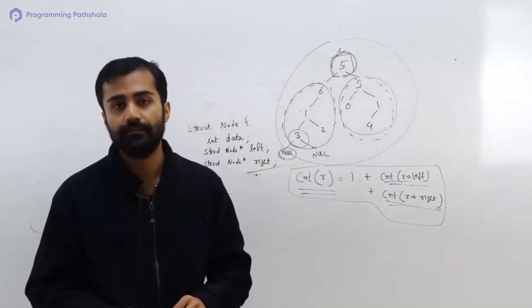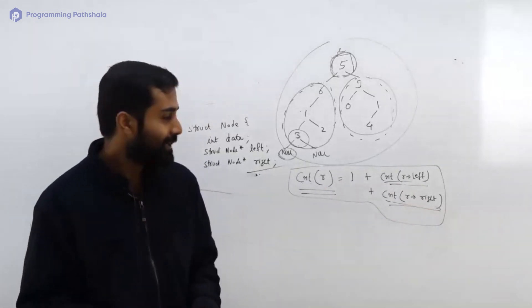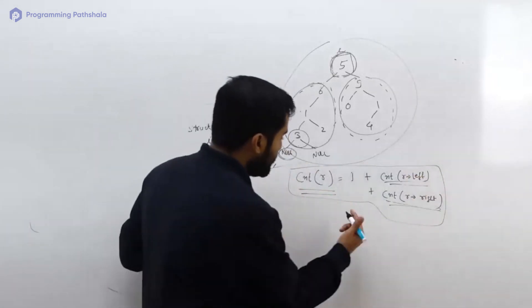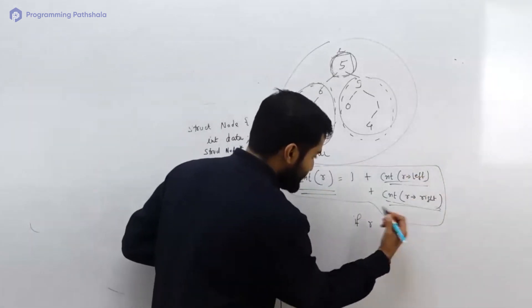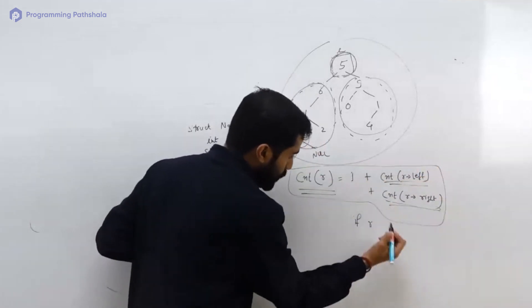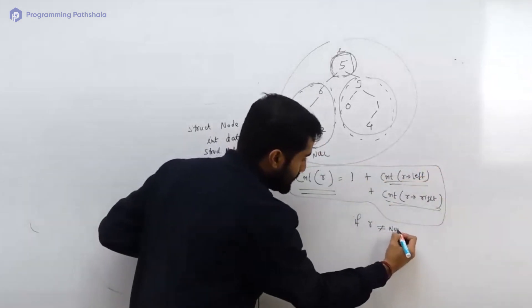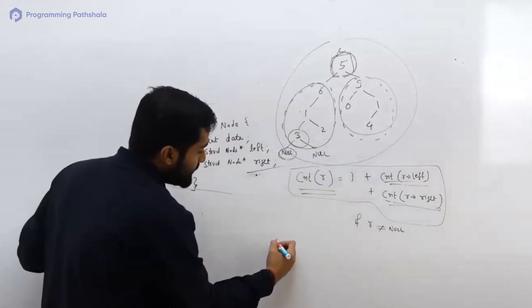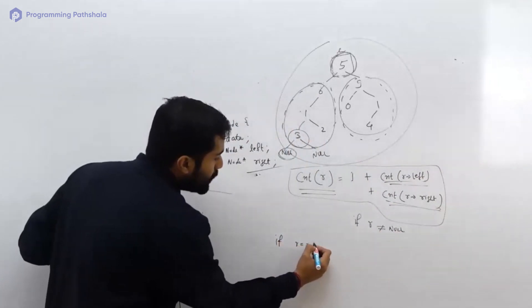So this thing is not applicable if r is null. I would say that this thing is applicable only if r is non-null. But if r is null, think about r being null. So let's say there is an empty tree, there are no nodes in it.